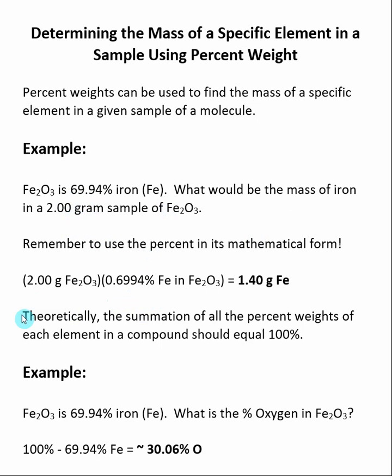To answer this question, we take the total weight of our molecule, which was 2 grams of Fe2O3, and then we multiply by the percentage of iron inside of Fe2O3. We multiply together, and we get that in that 2 gram sample, 1.40 grams is due to iron.